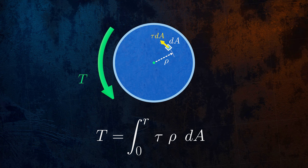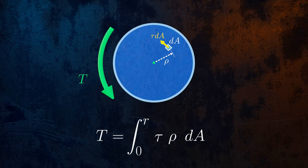We know that the quantity tau divided by rho is a constant, because the shear stress varies linearly with the distance from the center of the cross section. So we can rearrange the terms and move tau over rho out of the integral.